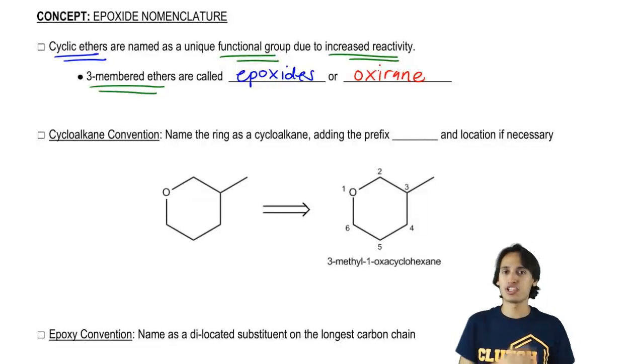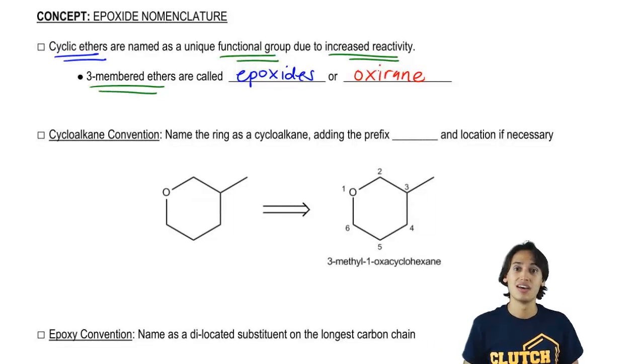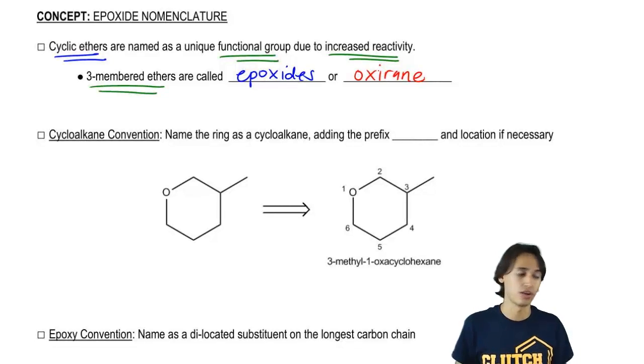Cool so far, right? Now the challenge becomes how do we name these guys because sometimes, first of all, they're not always three-membered rings and second of all, there's a lot of substituents. So it turns out that there's three different common ways to name epoxides and I'm going to go over all of them right now.